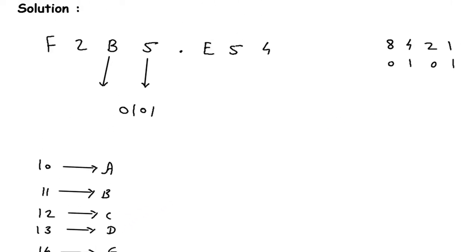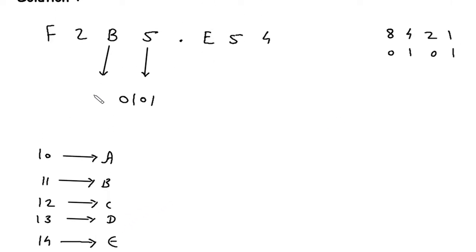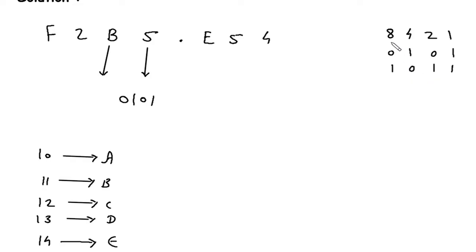Here it is B, which means it is 11. So 11 means 8 plus 2 is 10, and 10 plus 1 is 11. So this will be 1, 0, 1, 1. The binary for B is 1011.